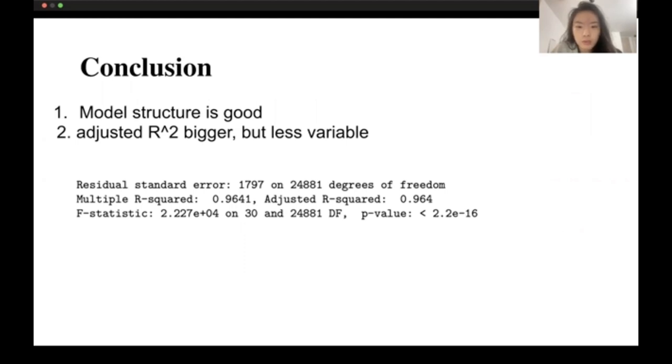The adjusted R-squared before transformation was 0.9596. After we add some interaction variables, it becomes 0.964.